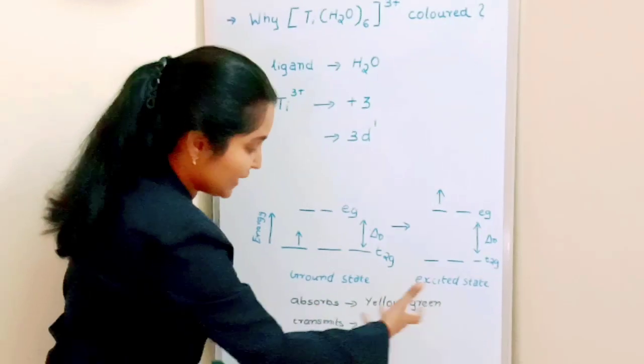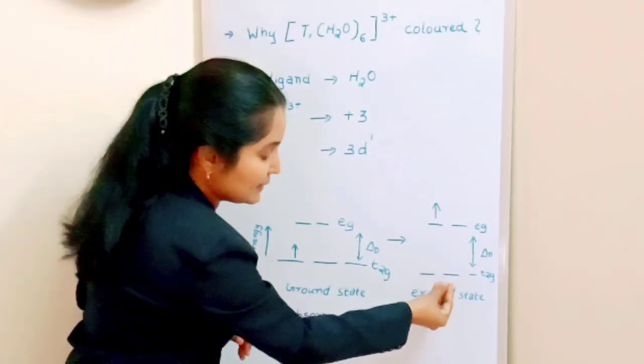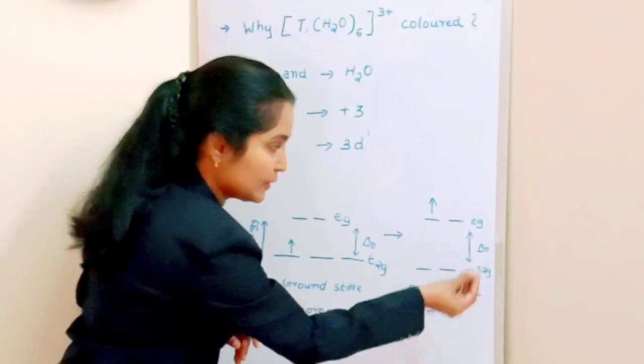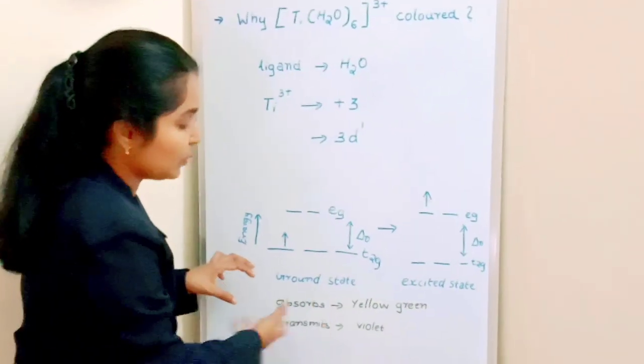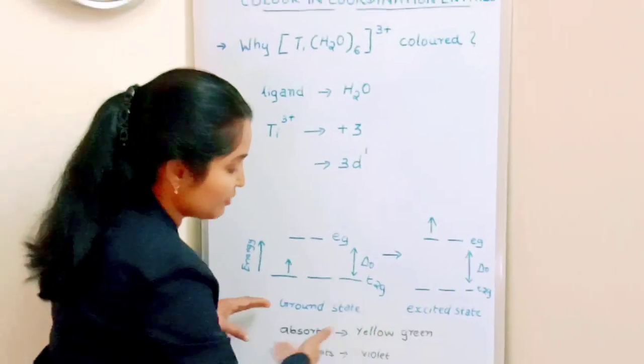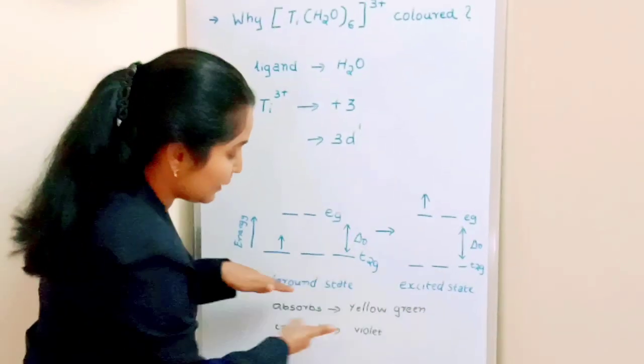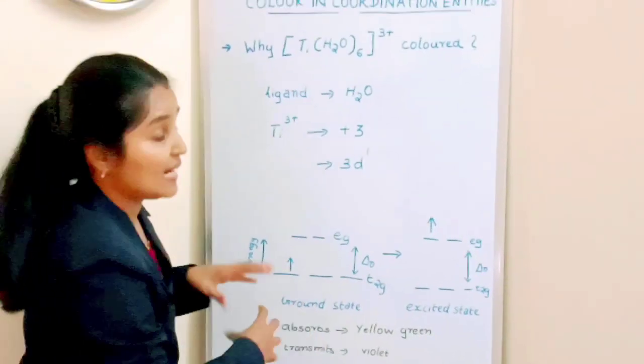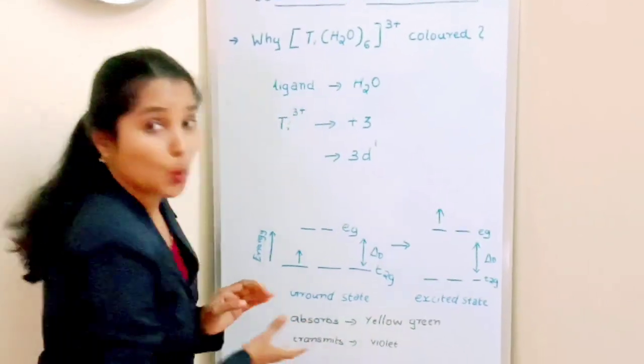That frequency of radiation absorbed during the jump from the lower d orbital (T2G) to EG level equals the frequency in the visible region, yellow-green. Since it absorbs this frequency equal to yellow-green, it will transmit the complementary color, which is violet.